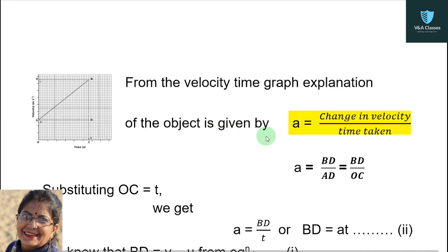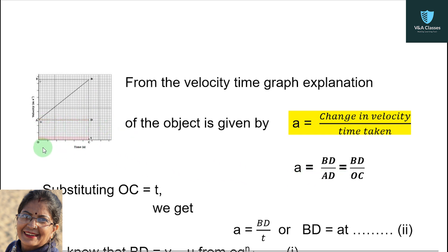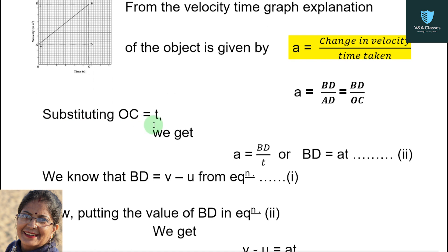From the velocity-time graph, since the object moves with uniform acceleration, we write the acceleration formula: A equals change in velocity upon time taken. Change in velocity here is represented by BD, and time taken is represented by AD. In the next step, AD is replaced by OC, and OC is replaced by T. Substituting OC equals T, we get A equals BD upon T. Cross-multiplying gives BD equals AT. This is taken as equation 2.